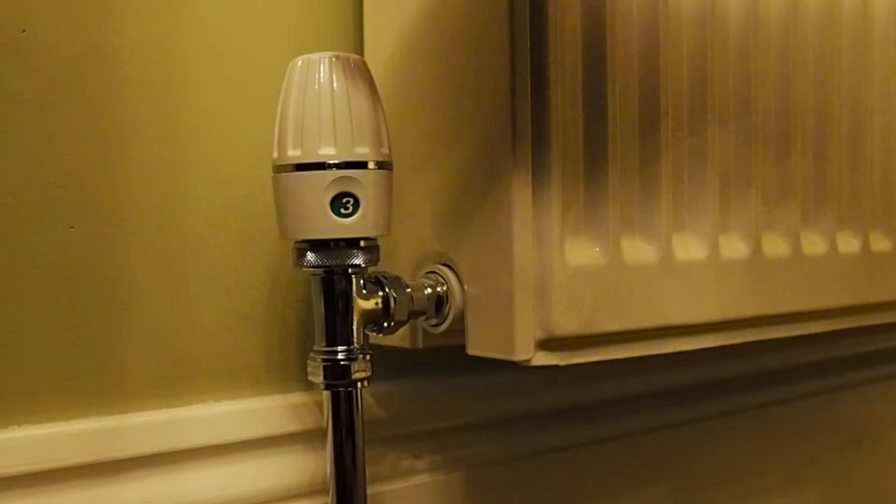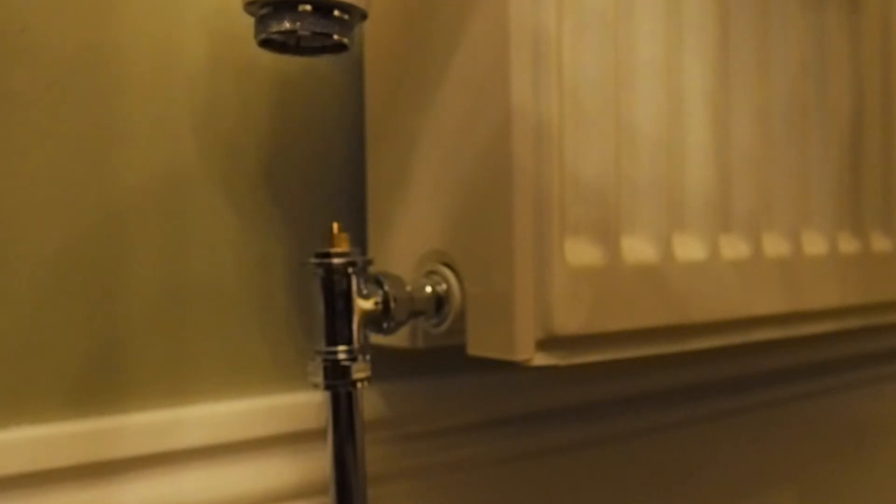A far better approach is to simply remove the TRV from the radiator. This is easily done by unscrewing the collar at the bottom of the TRV. Once unscrewed, the TRV will simply lift away from the radiator.